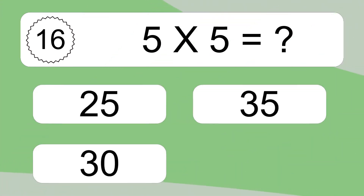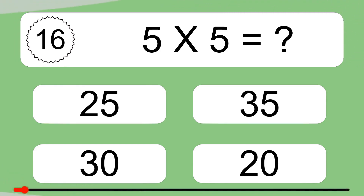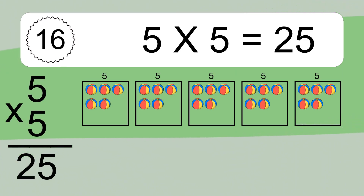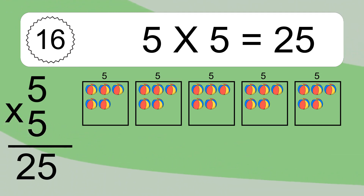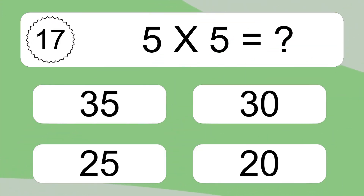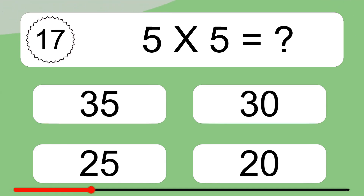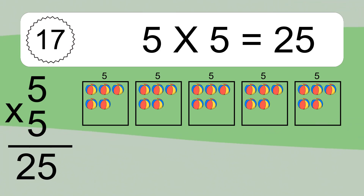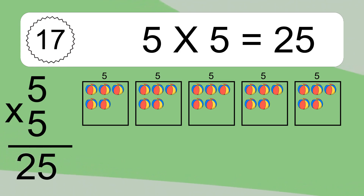5 times 5 equals what? 5 times 5 equals 25. We have five boxes and each box has five colorful balls inside. If you count all the balls in all the boxes together, you will have five times five balls. This equals 25 balls.